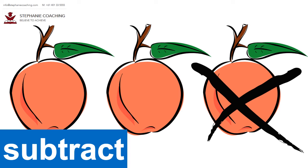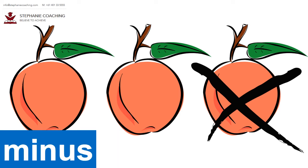Word number 24 is minus. Minus is the synonym for the word subtract. Three minus one equals two.